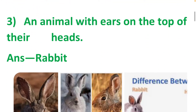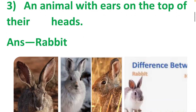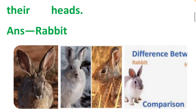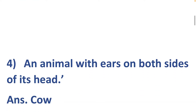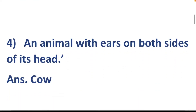An animal with ears on the top of their heads. Some animals have ears on top of their heads and some animals have ears on their sides. Rabbit is an animal with ears on both sides of its head. Answer: cow.